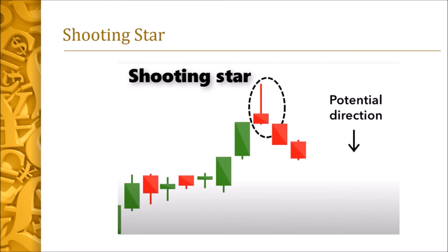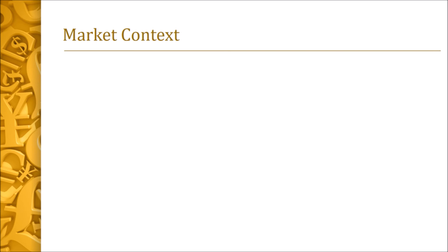The shooting star looks like a hammer but in an inverted style. It signifies selling pressure or injection of funds into the market by market makers. If you see this after three swipes to the high from the Asian range, it gives you an edge to take your trade in that direction.